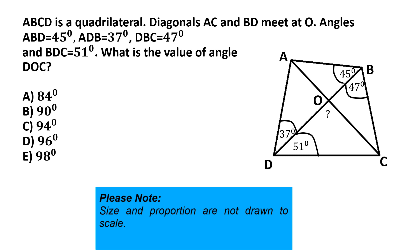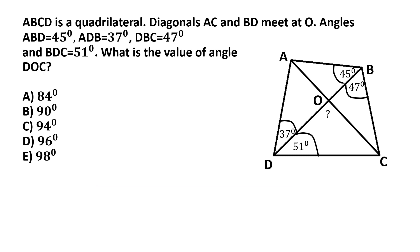...if you take the sum of these two angles, angle ADB and angle BDC, you get this big angle that's marked in blue, namely angle ADC. So that's one of the angles of the quadrilateral. Angle ADC will be 51 degrees plus 37 degrees which makes 88 degrees.